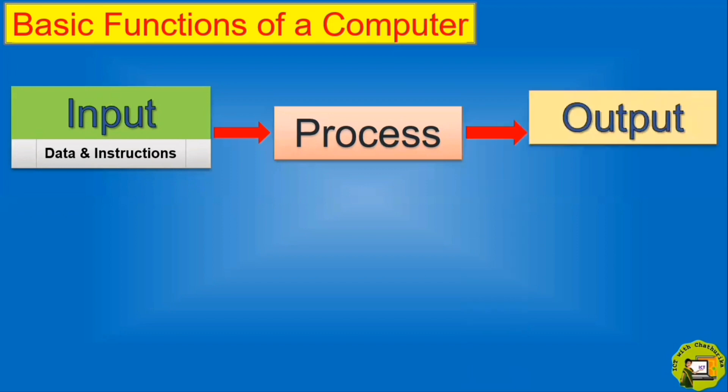Finally, we can get information as output. This output is the act of producing something or sending out this processed data. For this purpose, we mainly use our monitor. Devices used for this purpose are called output devices.